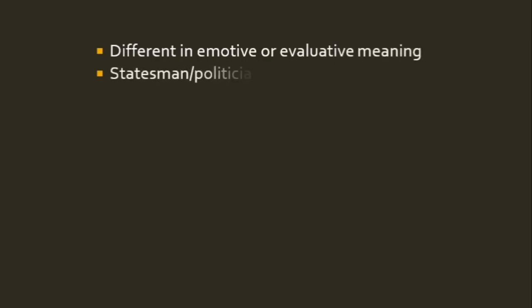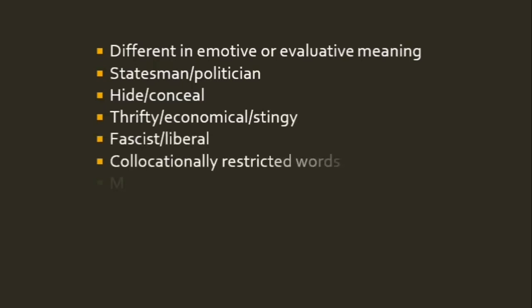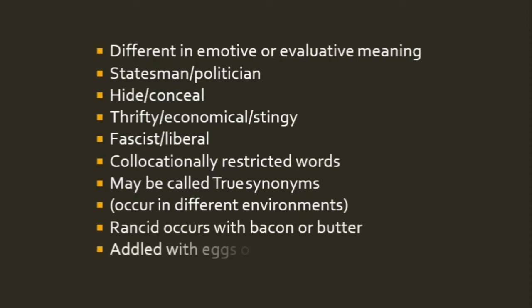A third difference is in emotive or evaluative meaning — for example, statesman versus politician, hide versus conceal, thrifty versus economical versus stingy. Another type is collocational synonymy: words with the same meaning that occur in different environments. For example, rancid collocates with bacon and butter, while addled collocates with eggs and brains — both convey the idea of something expired, but they collocate with different nouns.